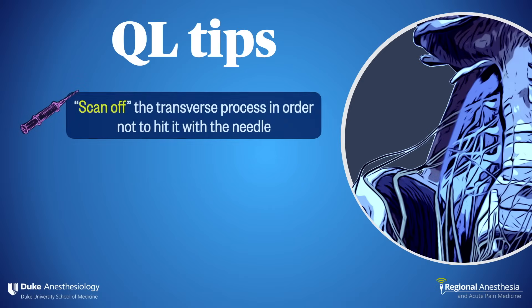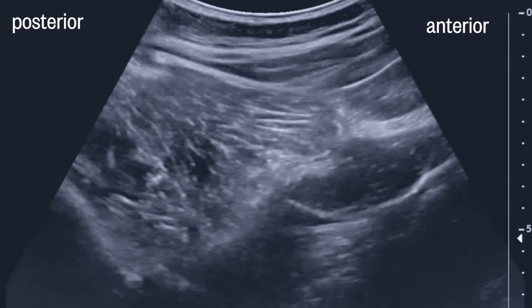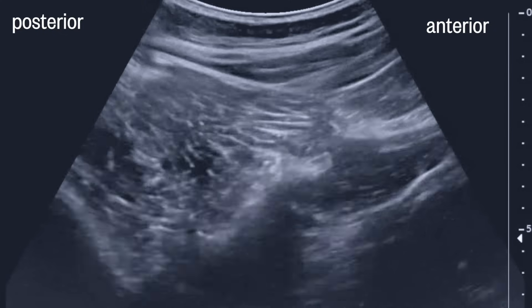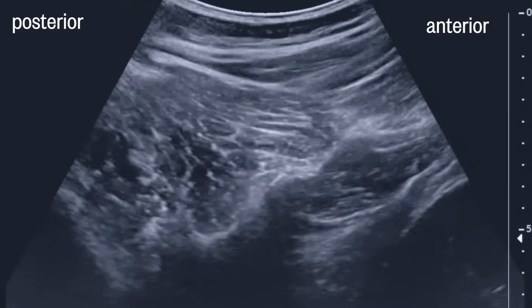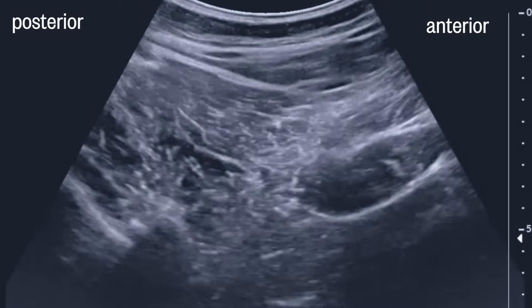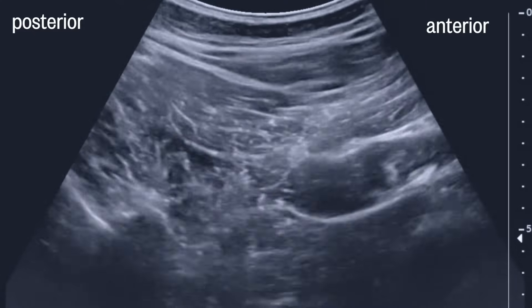Here are some QL tips for success. First, we do like to rely on imaging of the transverse process to anchor our image and easily identify the QL muscle. However, you don't want that bony structure to be in your needle path. A slight shift cephalad will take the TP out of the picture, leaving you with a clear shot to the target.